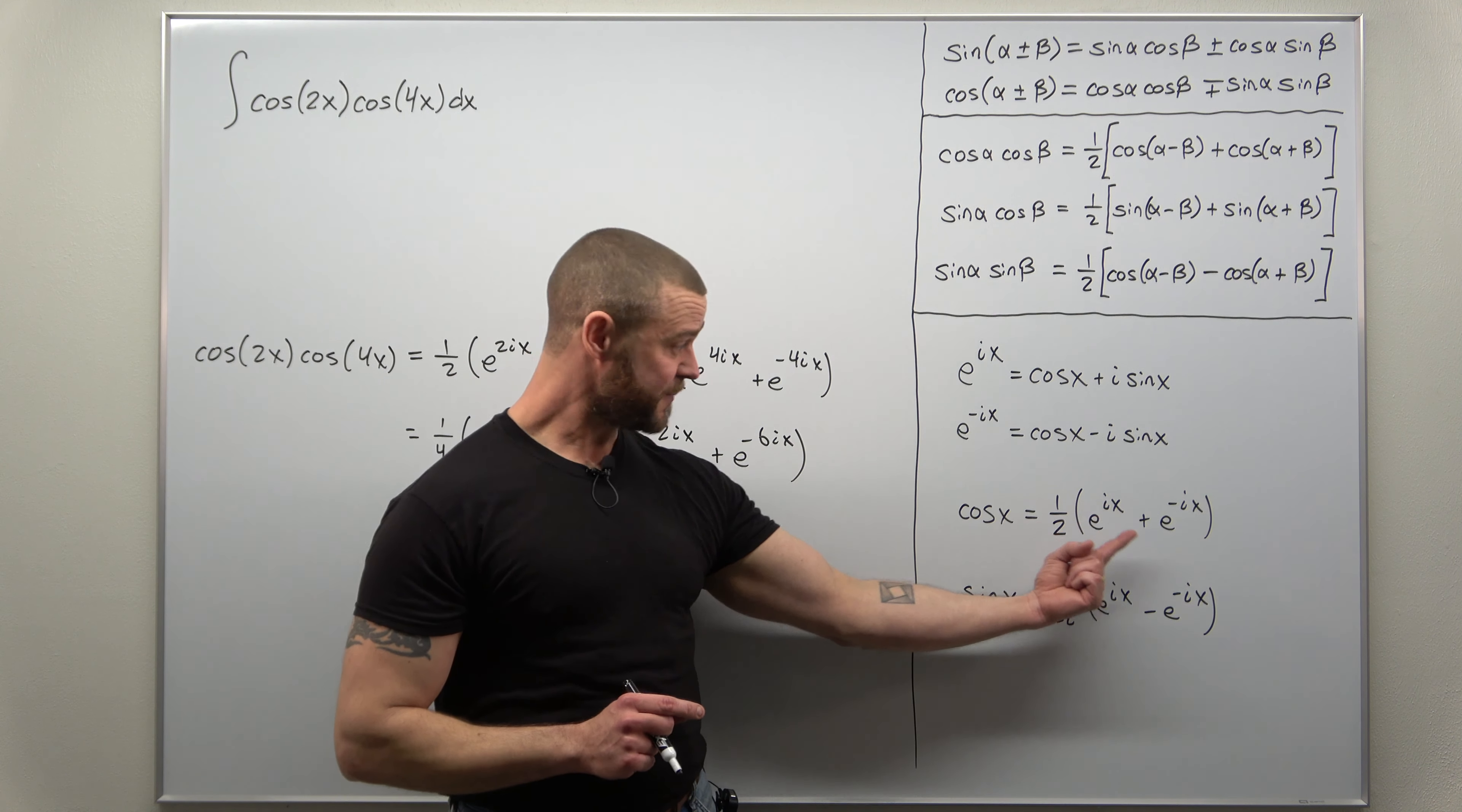I'm taking that factor of a half and multiplying it to each set of terms, grouping the 6ix terms and 2ix terms together. So the last two, we get another plus one-half e to the 2ix plus e to the negative 2ix.